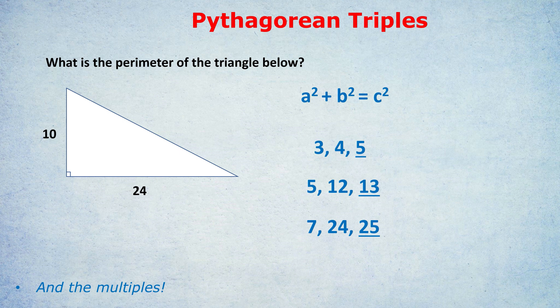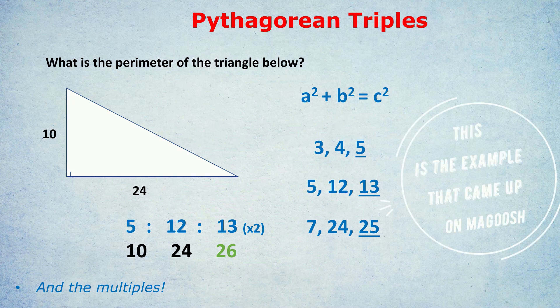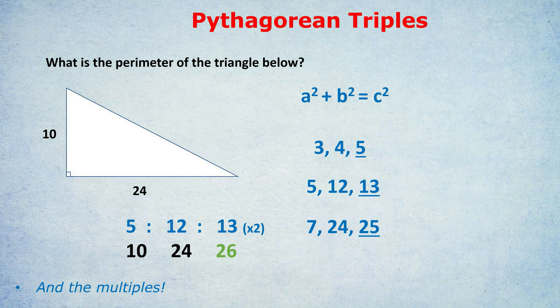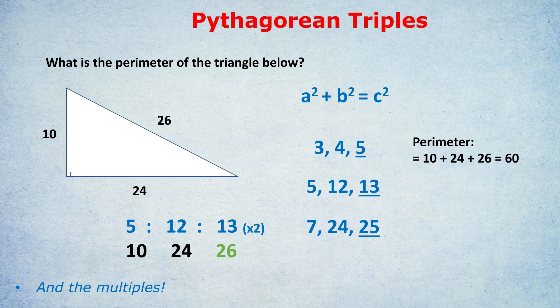Any multiple of these three triples also counts as a triple — that's definitely worth writing down with examples. Take the first triple, 3-4-5: if we double it, that's also a triple — 6-8-10. And if we treble it, 9-12-15 is also a triple. So it's not just three simple examples to memorize; it's all the multiples too. The perimeter of that triangle was 10 plus 24 plus 26.